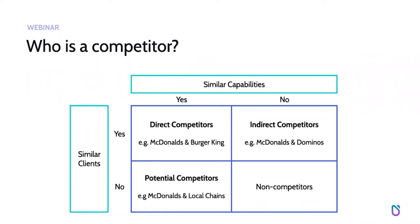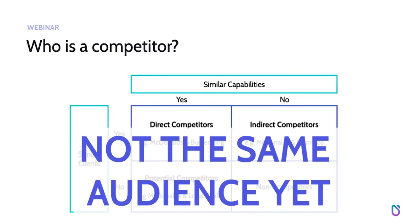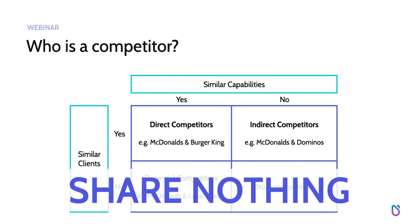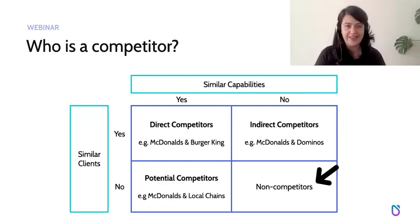Then you have companies that have similar capabilities but don't share the same audience yet — like local chains with local audiences. These are potential competitors, either on the local market or if they decide to expand. These are upcoming or future competitors that we need to keep an eye on, though they're less of a threat than direct or indirect competitors. And if we share absolutely nothing with another company, then we're simply not competitors.